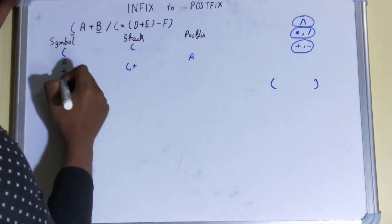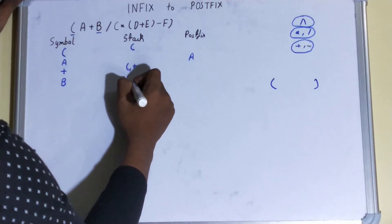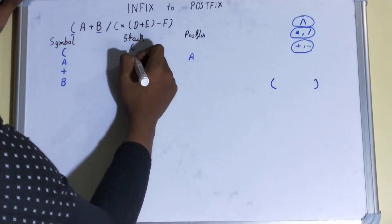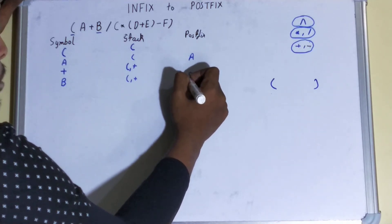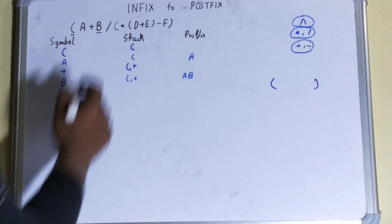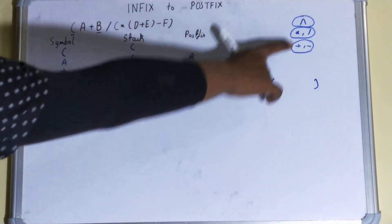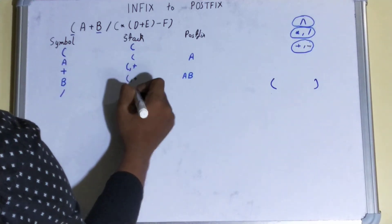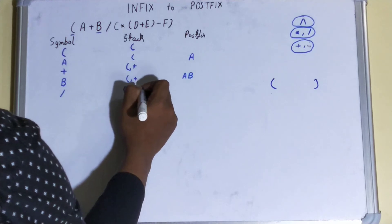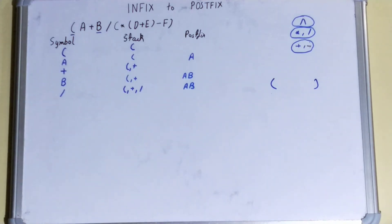Next comes B, which is an operand, so we send it to the postfix column — giving us A B so far. Next comes division. From the precedence table, division has higher priority than plus, so it is fine to stack it in. Now the stack has the opening bracket, plus, and division, and the postfix has A B.